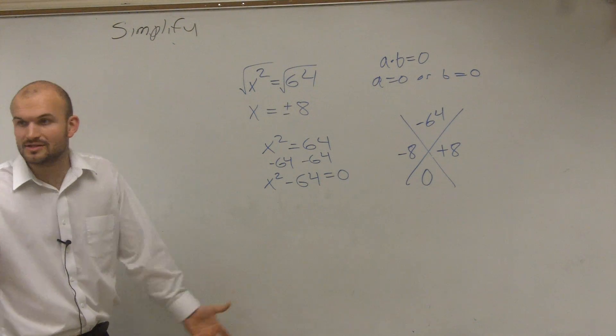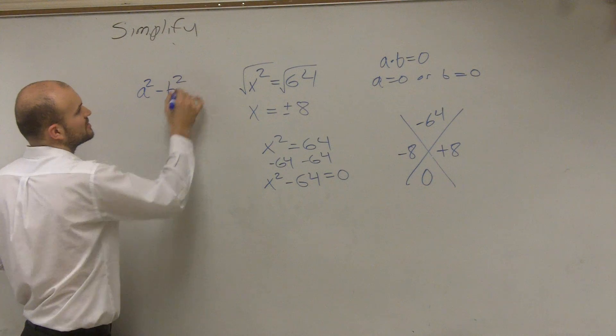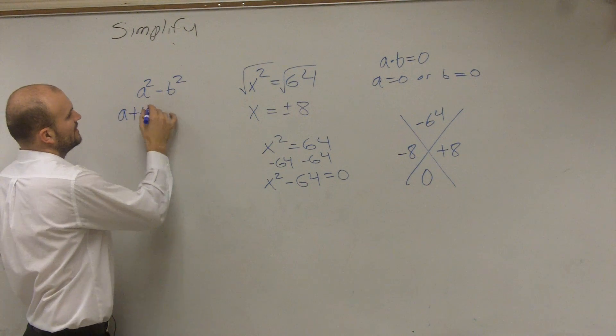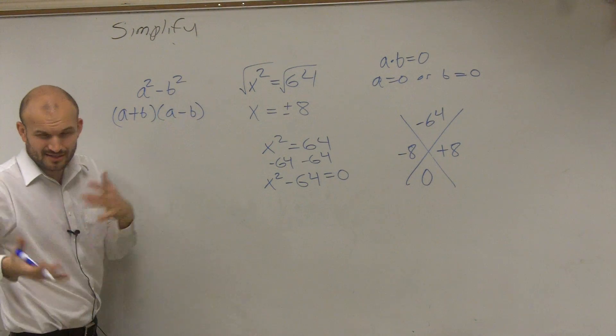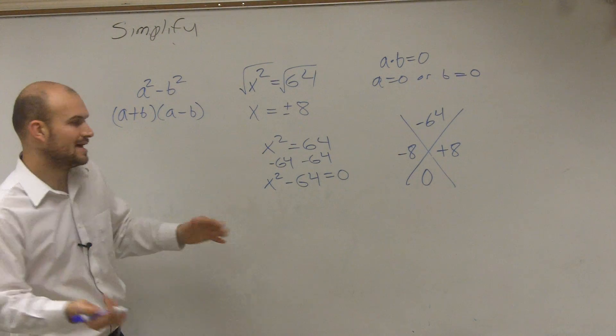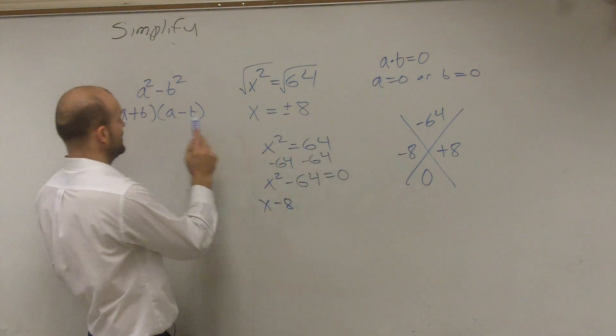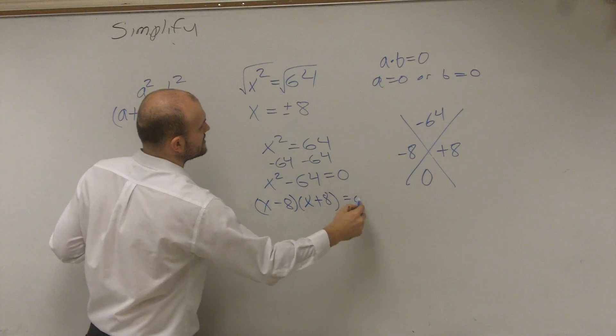However, there is also another thing we worked on. Do you guys remember the difference of two squares? If I said a² - b², that tells you (a + b)(a - b). That was the difference of two squares. So there's a lot of different ways to write this, but what I want to show you guys is (x - 8)(x + 8) = 0.